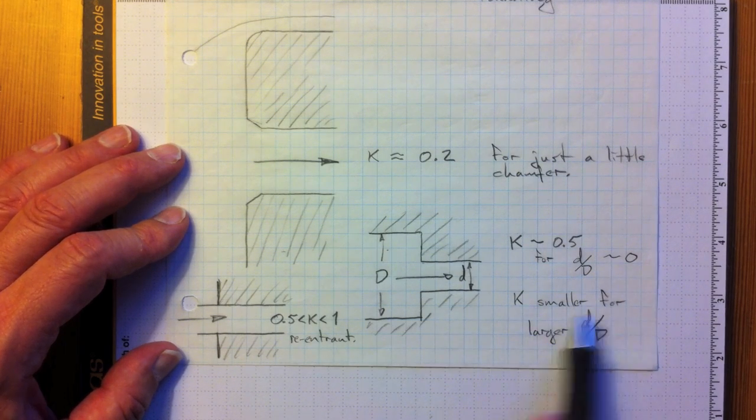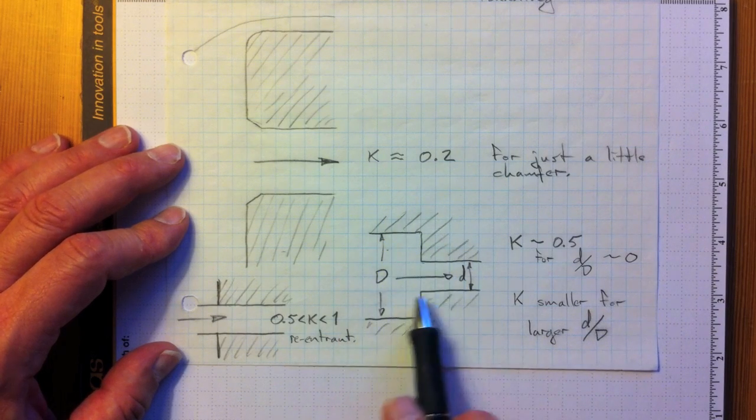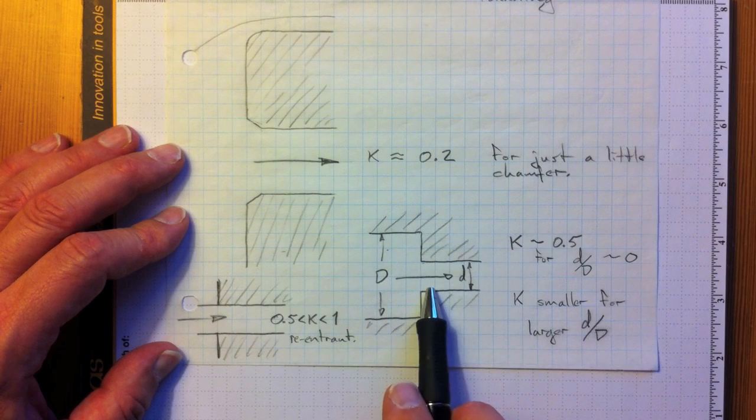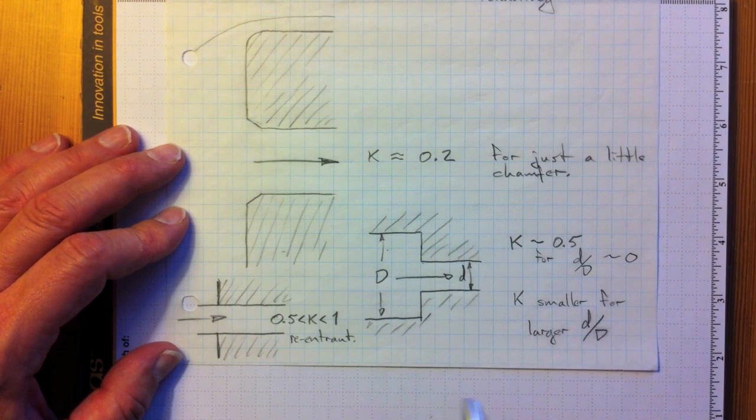K gets smaller as the ratio between these two gets closer and closer. And again, you can go to tables for the values of that coefficient.